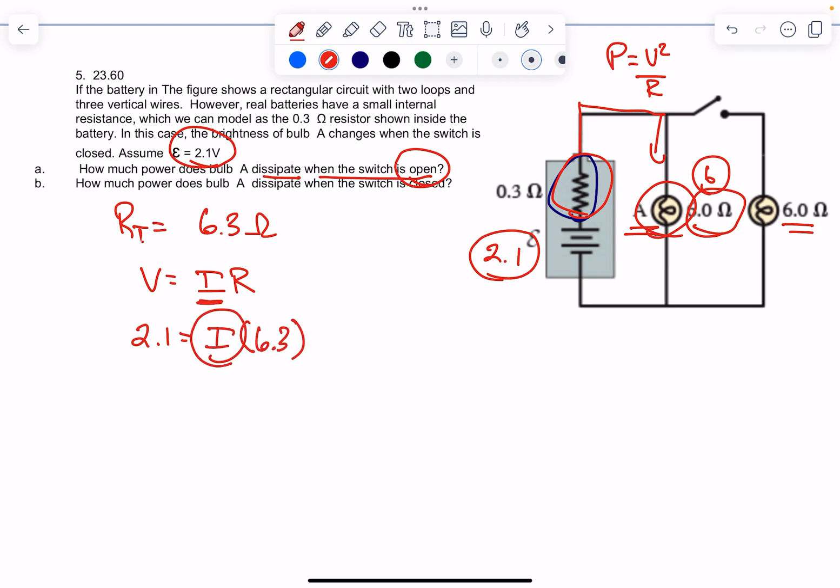Once I know I, I can take I times 6, and that equals my voltage of resistor A. Then I can plug that into my power equation: V_A squared over 6, and that gives you your answer.